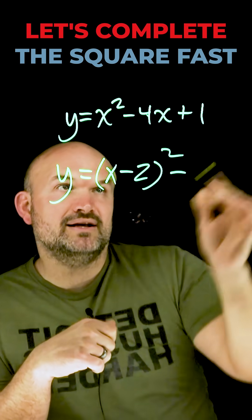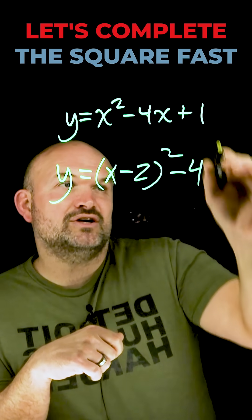So 4 divided by 2 is 2. 2 squared is going to be a 4, and then you still have your c plus 1.